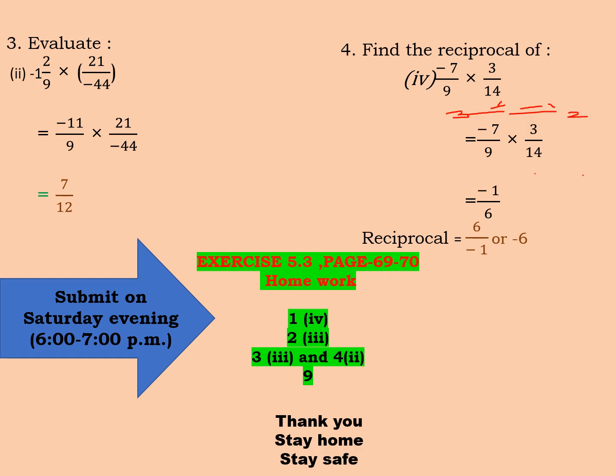So you have two homeworks today. If you have seen earlier also, 5.2 asked to do some questions. And now it is exercise 5.3, page 69 and 70. You have question number 1 subpart 4 to be done, 2 third part, 3 third part, 4 second part, and question number 9. Question number 9 is very simple. They are asking you to find the area of a rectangular part whose length and breadth are given. So area will be what? Area will be length into breadth. So I ask you to do that. This homework you will submit on Saturday evening. And the homework which was given earlier needs to be submitted by Friday evening. That's all for today. Thank you and have a nice day.